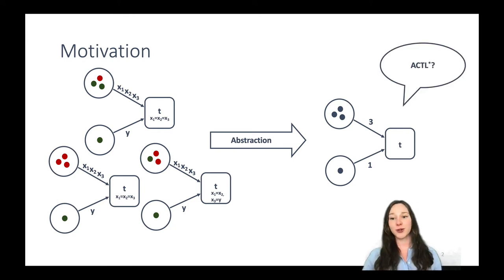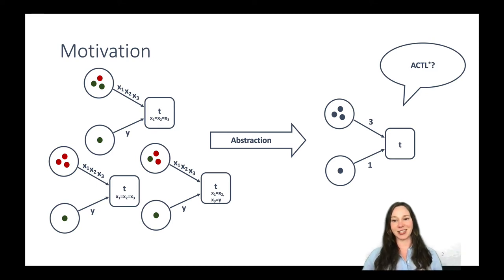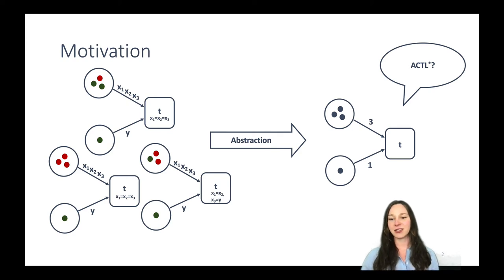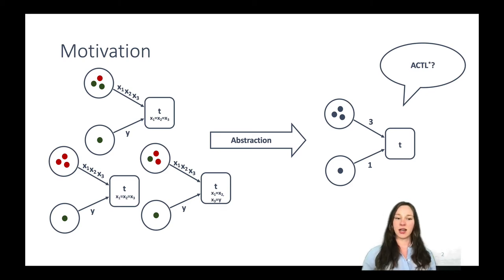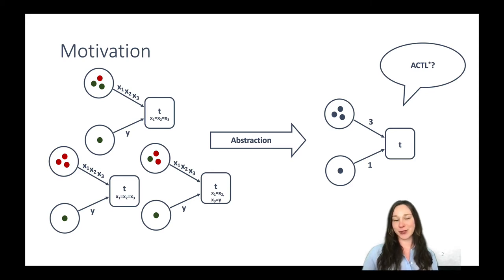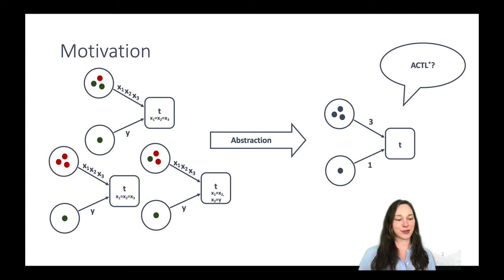We want to use the skeleton for answering questions about ACTL* properties. The goal is to verify an ACTL* property in the skeleton and transfer the result of the verification back to our underlying colored Petri Nets. This sounds easy, and we will soon see that it is not as easy as it sounds.